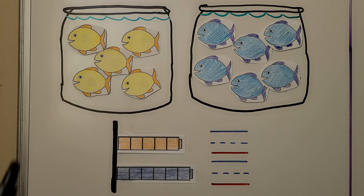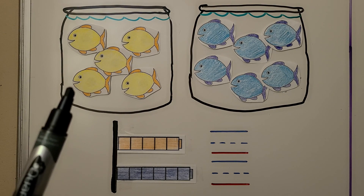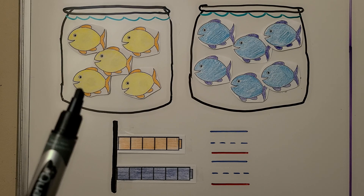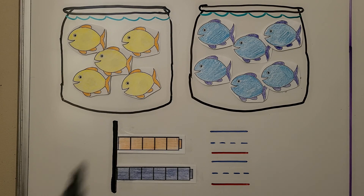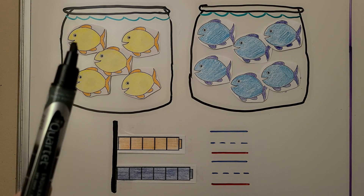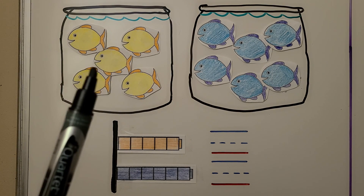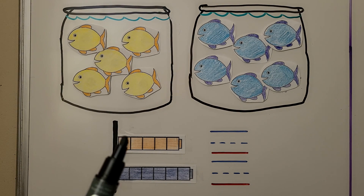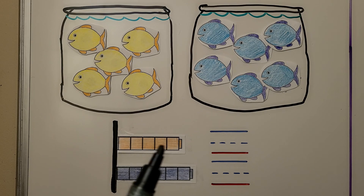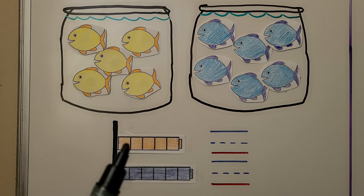Here we have a fish bowl with some yellow fish, and here we have a fish bowl with some blue fish. Which bowl has the greater number of fish? This one has one, two, three, four, five. We use five cubes in a cube train to show those fish.